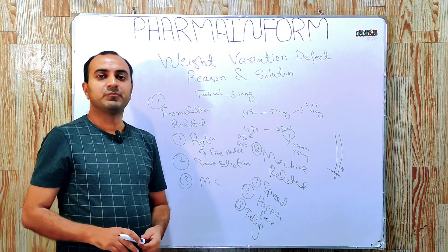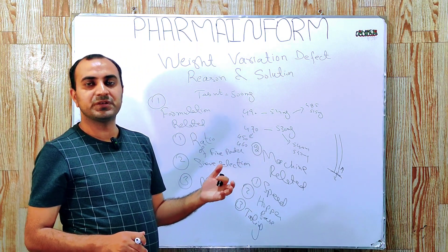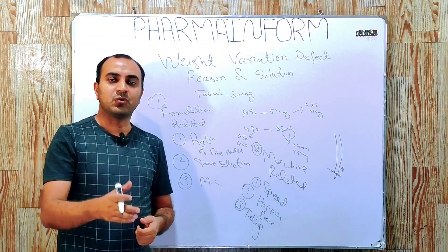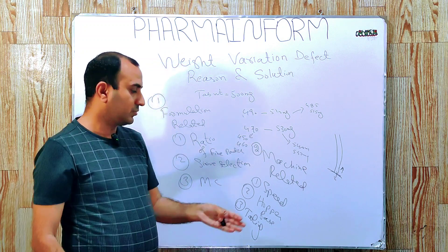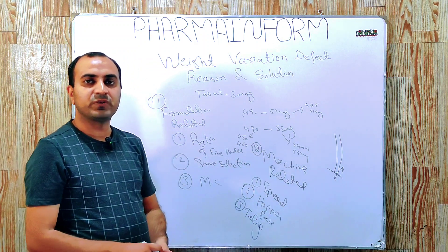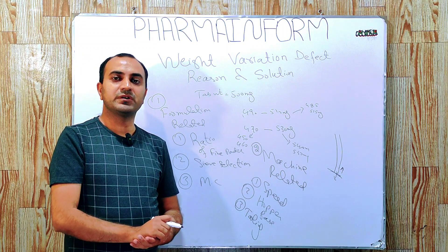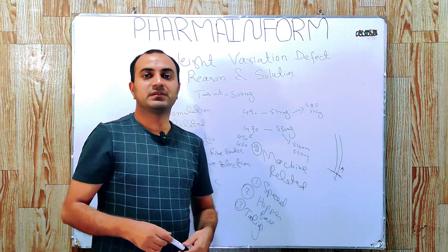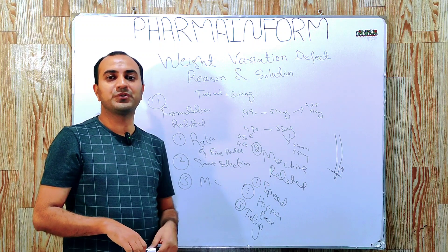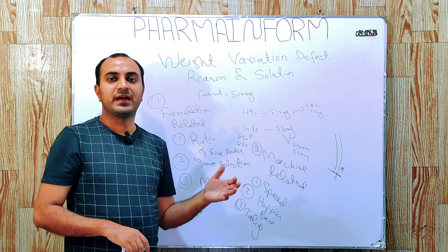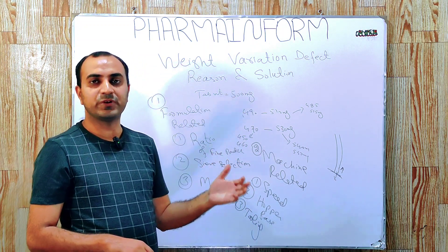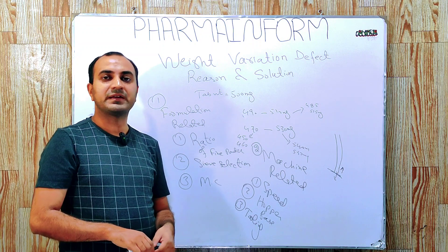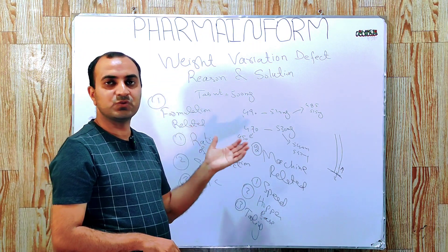The third machine related issue is tooling. If there is a variation in the length of our punches — whether upper or lower punches — it will result in weight variation. To find if there is any length variation in your punches, routinely monitor the length of your upper and lower punches; you can easily measure the length using a vernier caliper. The next issue is the movement of lower punches. If the movement of lower punches during compression is not smooth and some punches are stuck or not moving freely, it will disrupt die filling and result in weight variation. To solve the issue, remove all the lower punches, clean them, and reinstall them.